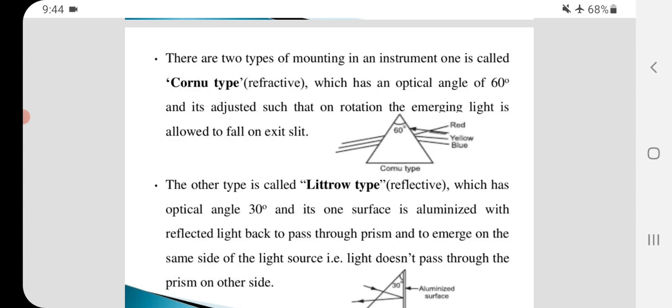One is called Corneautype refractive, which has an optical angle of 60 degree and it's adjusted such that on rotation the emerging light is allowed to fall on exit slit.